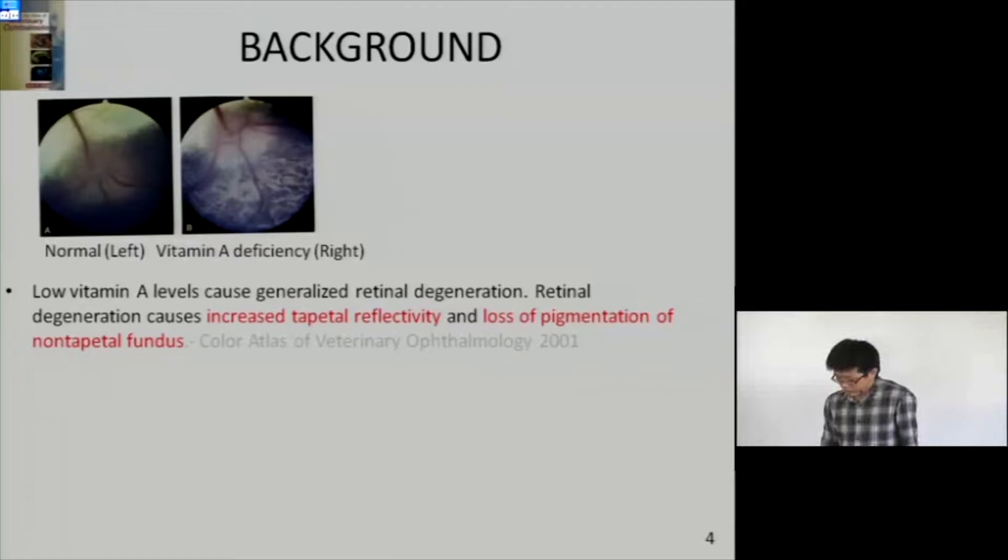Based on this hypothesis, we did our experiment. Another literature also compares the normal tapetum and the vitamin deficient tapetum. You can see the low vitamin A level can cause increased tapetum reflectivity and loss of pigmentation. Here it's very dark color, but in this part it is a mottled appearance, showing loss of pigmentation in this area.